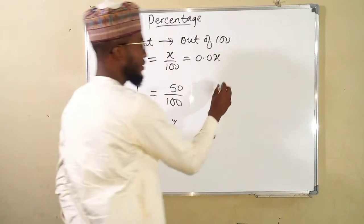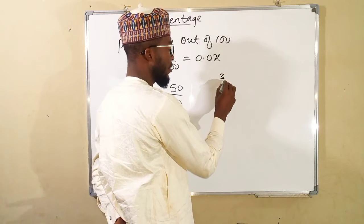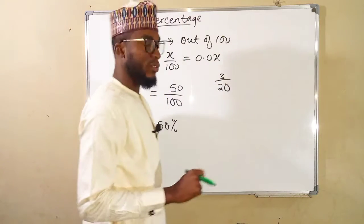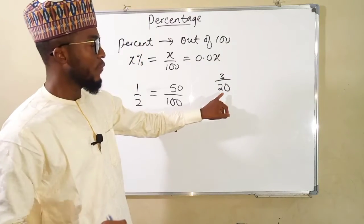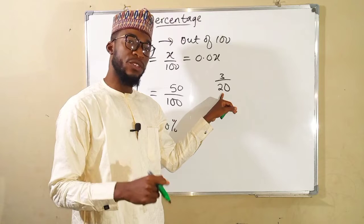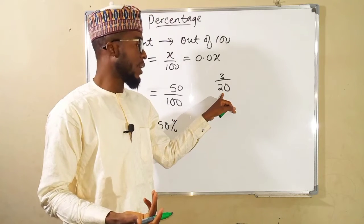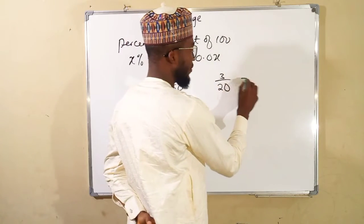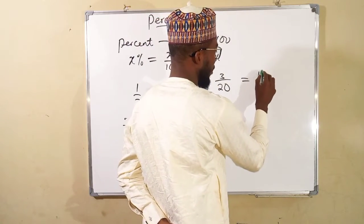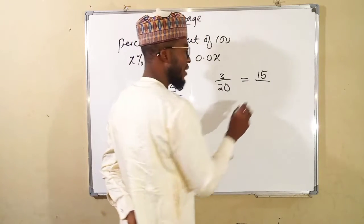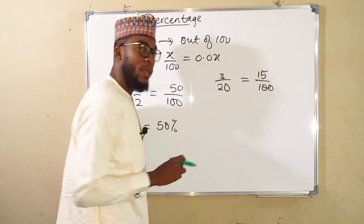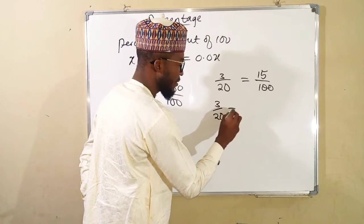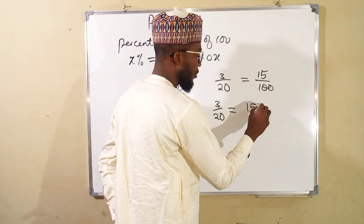Next, we want to convert 3 over 20 into percentage. We know that if we multiply 20 by 5 we get 100, and therefore we also multiply the numerator by 5. 5 times 3 is 15, and 20 times 5 is 100. This means that 3 over 20 is the same thing as 15 percent.